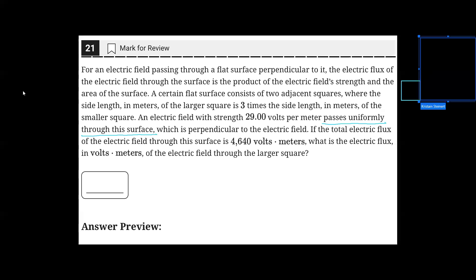Suppose we say the side length of the smaller square is x. That would mean the side length of the larger square is 3x. Further, we can say the area of the smaller square is x squared, and the area of the larger square is 9x squared.